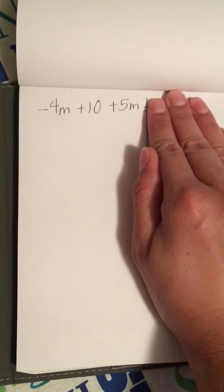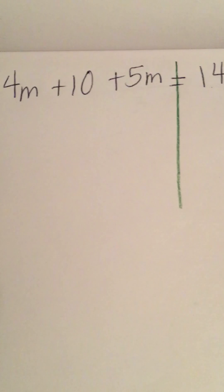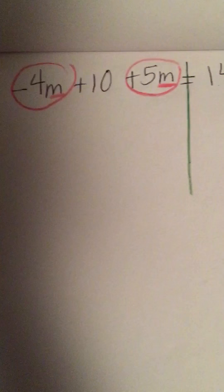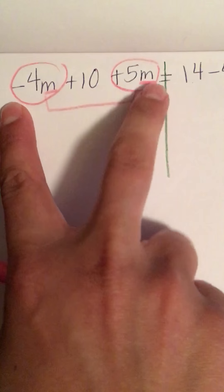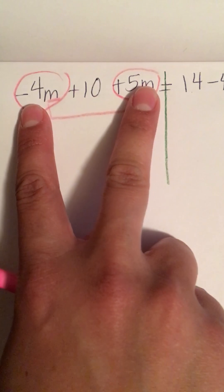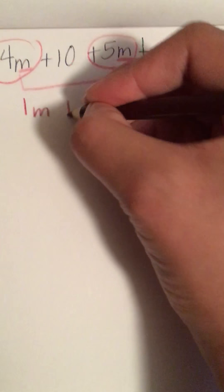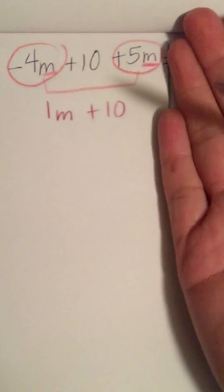So right here I see these are like terms because they both have an M as their variable, so I'm going to put them together. Notice they're on the same side, so I just need to add them. 5 minus 4, remember different signs we subtract and keep the sign of the largest, so right here it would be 1M plus 10. Now that side is simplified.